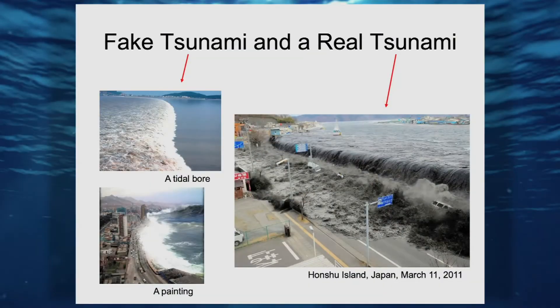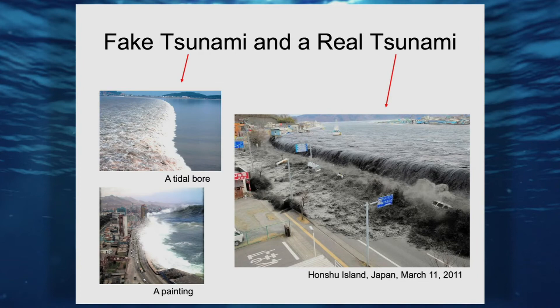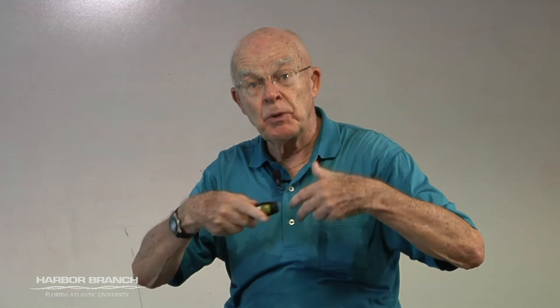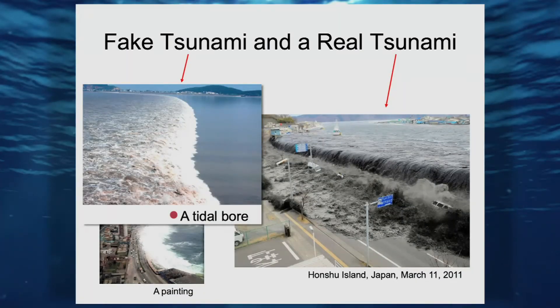If you Google tsunami, you might get a variety of hits. One image is a real tsunami; the others are not. In the upper left is a breaking tidal bore — when tides move into an estuary, the tidal crest can become unstable and break, just like a wind wave breaks when it hits the coast. That's called a tidal bore. You would not want to be in the path of that in a boat, but it's not a tsunami.